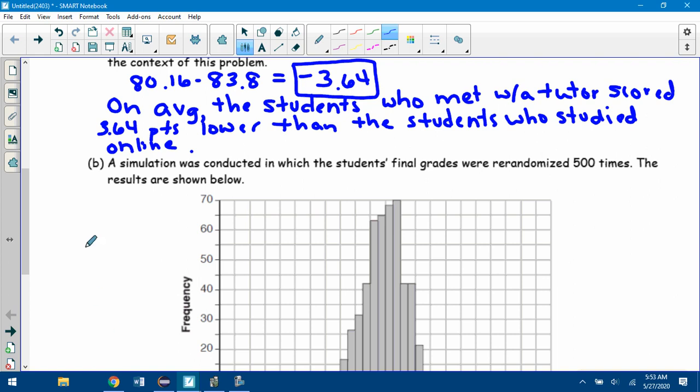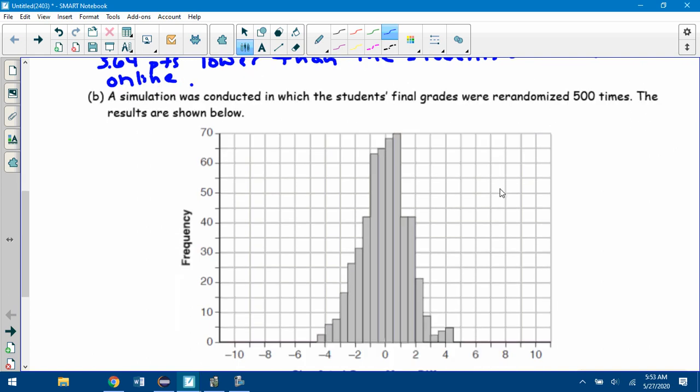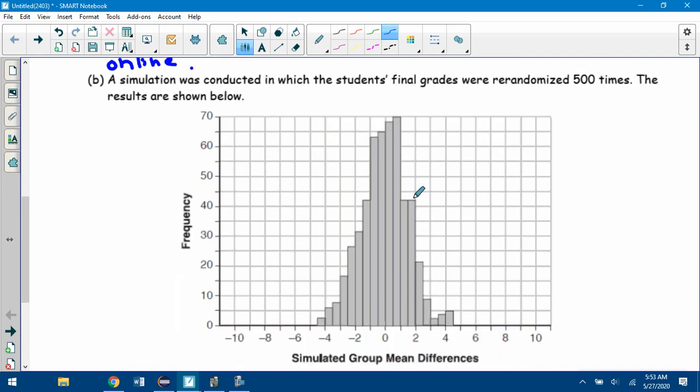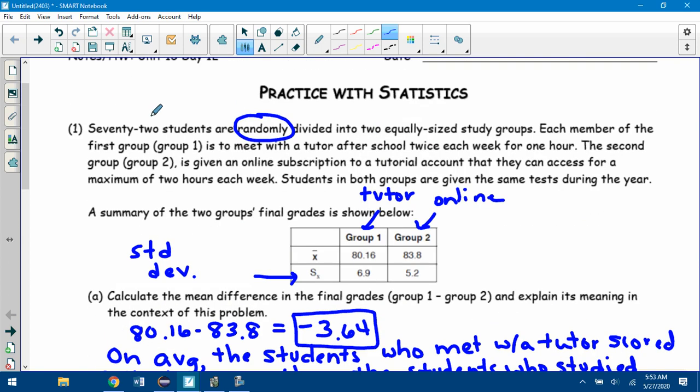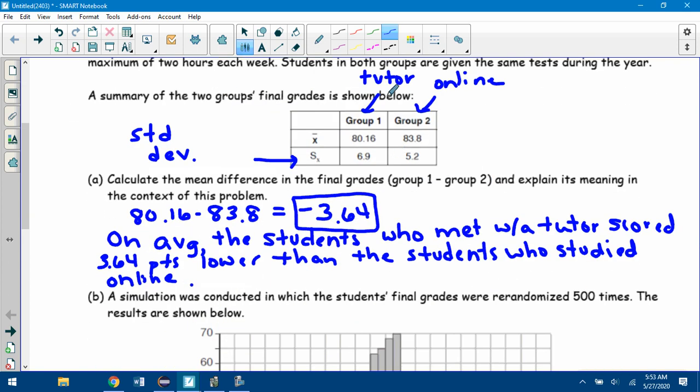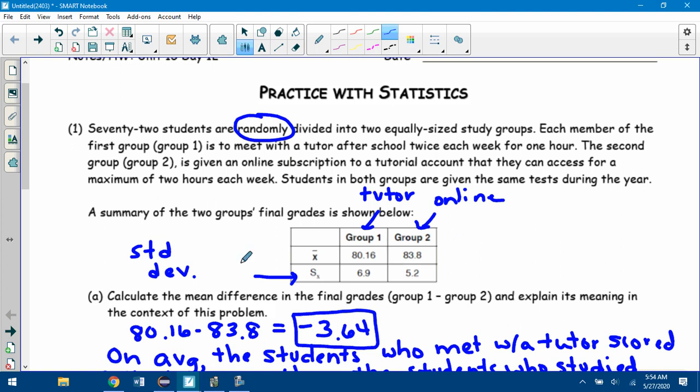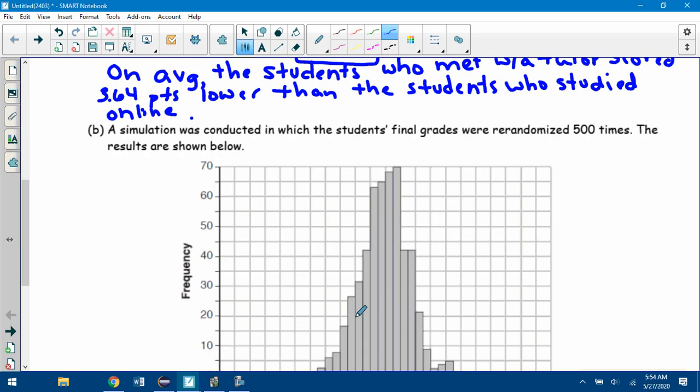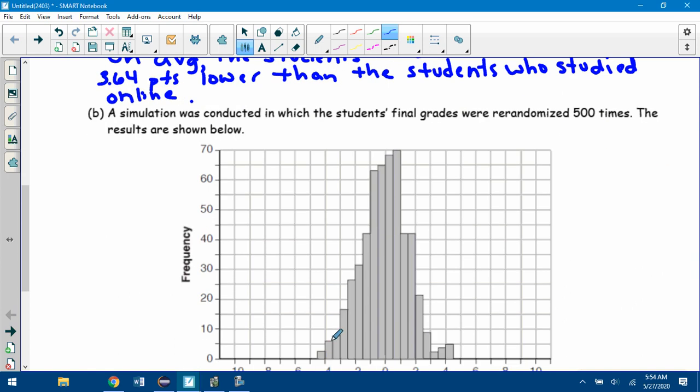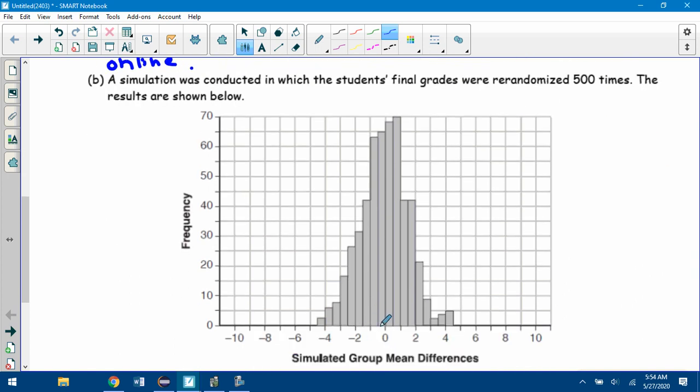That's what a simulation can help us with. The simulation was conducted in which the students' final grades were re-randomized 500 times. The results are shown below. This isn't a dot plot, but it's like it. It's a histogram. And there's 500 student scores, or 500 differences of groups represented here. So remember what this does: you have 72 students, so there's 36 students here, 36 students here. Initially the groups are split by tutor and online, but now we're taking these 72 students and just randomly putting them into two groups of 36. So in those random groups, some of them had tutor, some of them had online. These other pairings, these other groups, we'd expect the difference to be clumped right around zero.